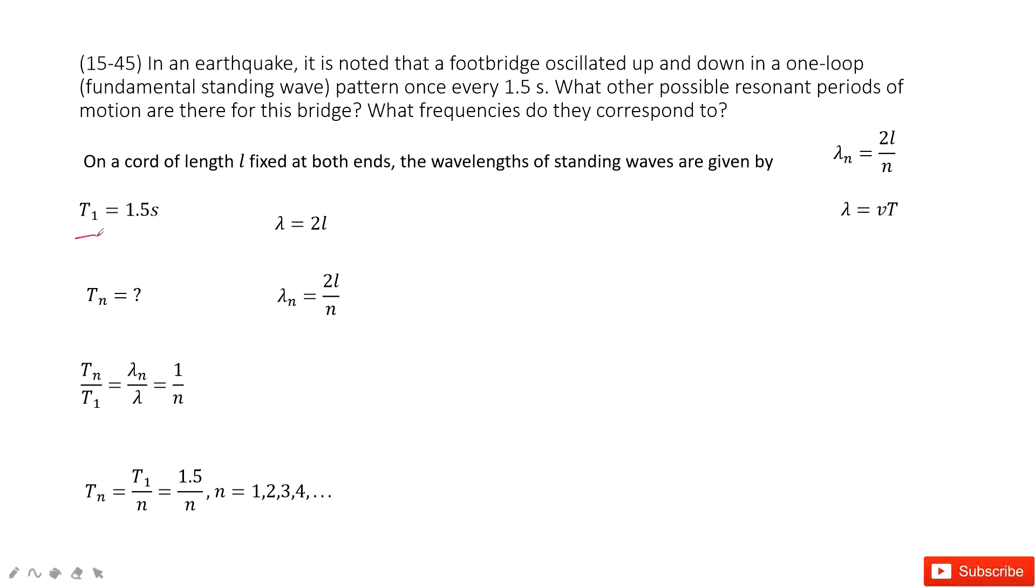So this tells you the period for T1. And for this bridge when it is oscillating, we can see the wavelengths of standing waves. So the initial lambda is just 2L.